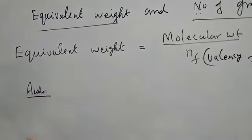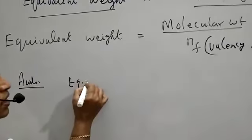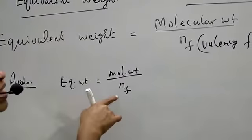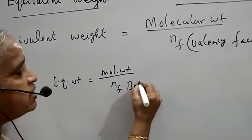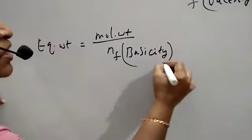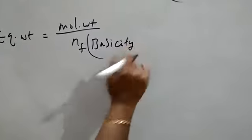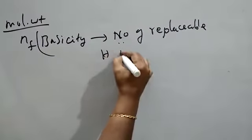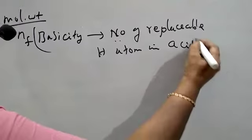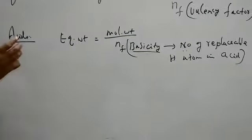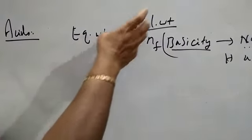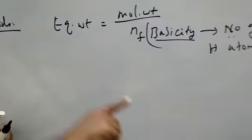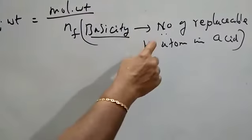Equivalent weight can be written for acids. For acids, equivalent weight equals molecular weight of the acid divided by N-factor. In the case of an acid, N-factor is the basicity of the acid. Basicity means the number of replaceable hydrogen atoms in the given acid. So for acids, equivalent weight equals molecular weight divided by basicity.